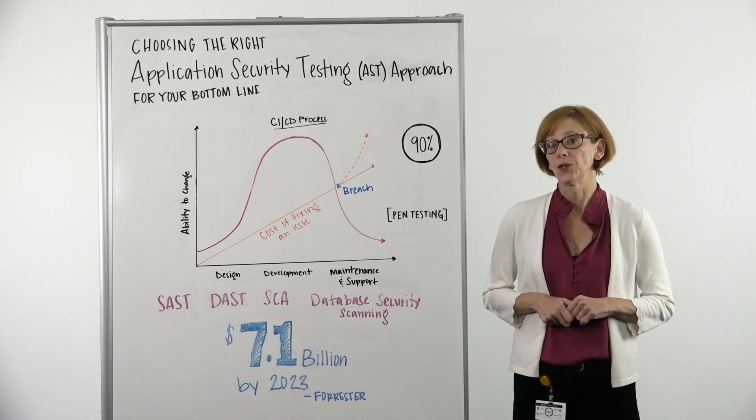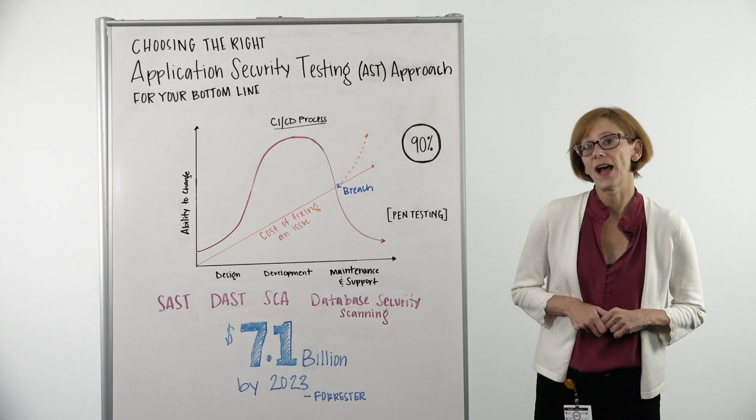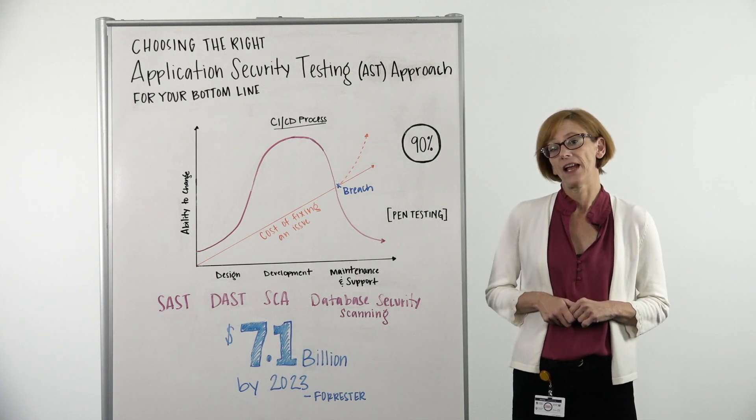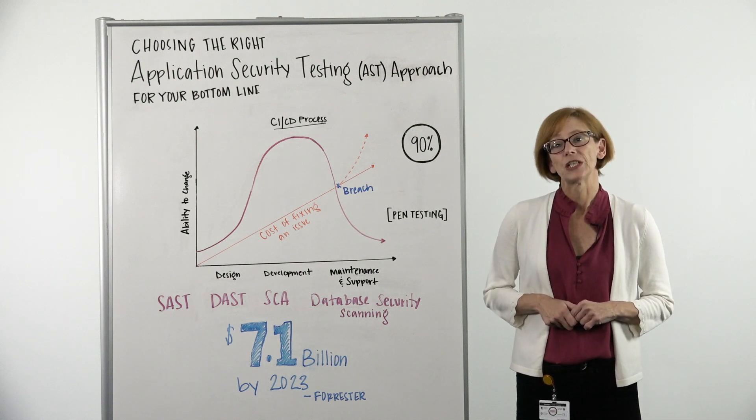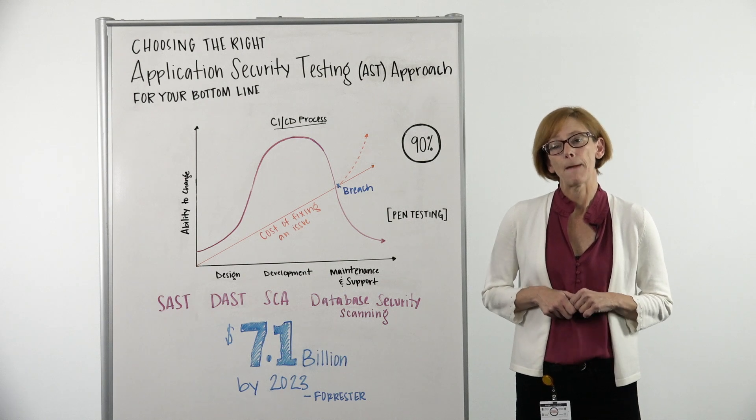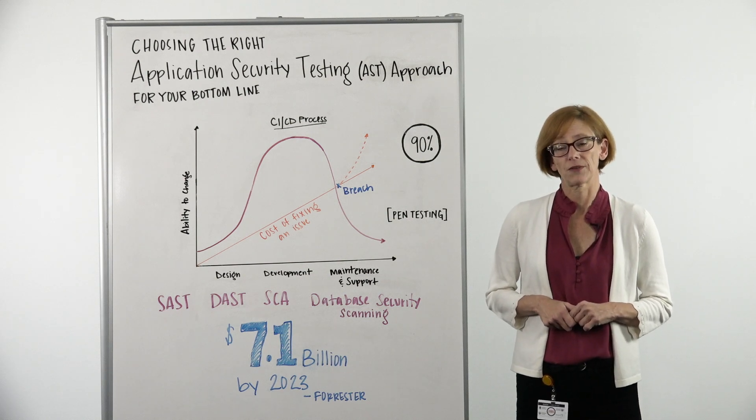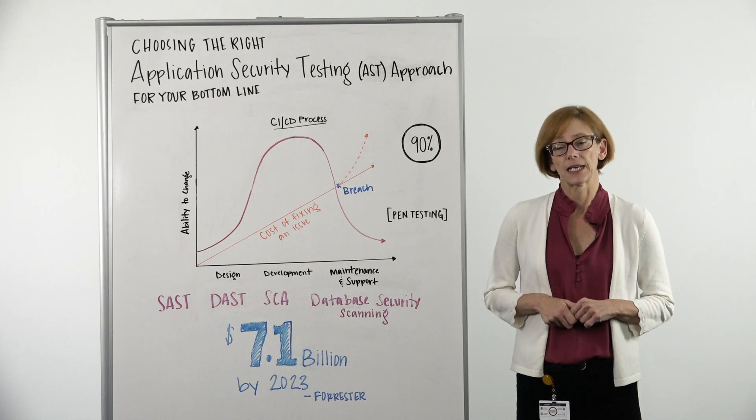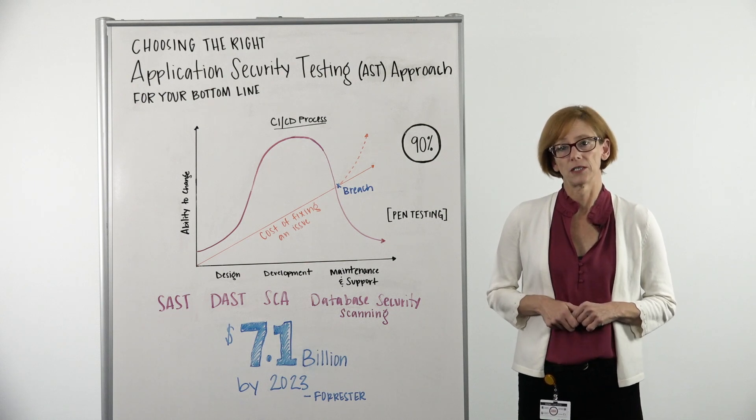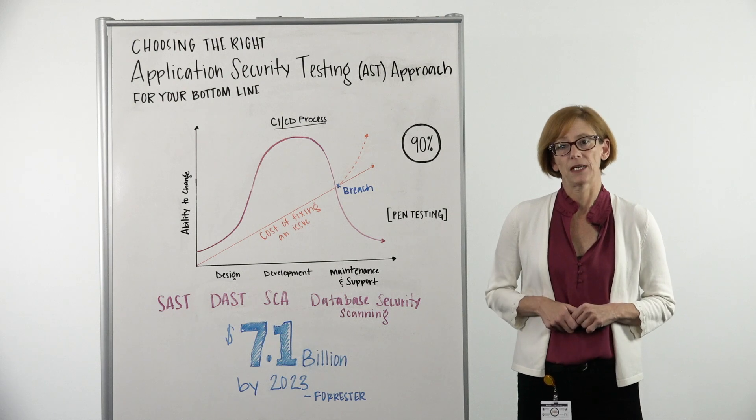Application security is something that's on your mind. You want to know why I know that? It's because I recently read a report that Forrester released saying that application security spending is going to reach in excess of $7 billion by 2023. Four years from now, the community is going to be spending $7 billion to secure their web applications.